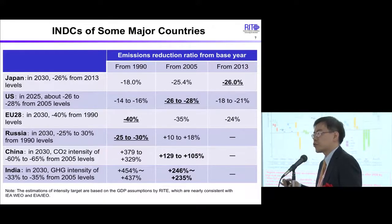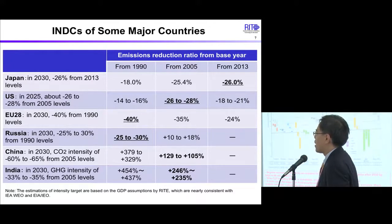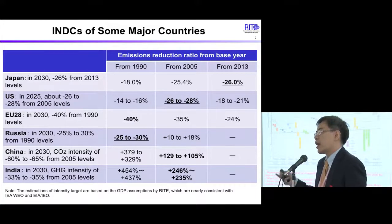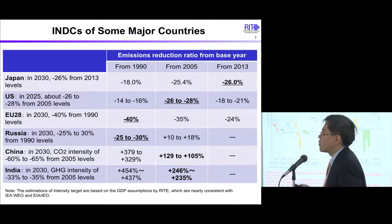If CCS is not available, a very large scale of afforestation is required to achieve this target. But in both cases, the impact on food security and prices through land conflict causes concern due to the large-scale biomass or afforestation requirements. More realistic solutions considering other socio-economic aspects will be required in energy transformation for the 450 ppm scenario.